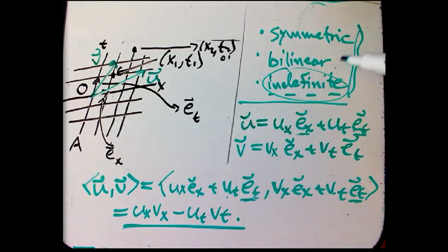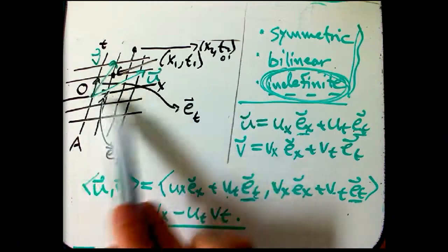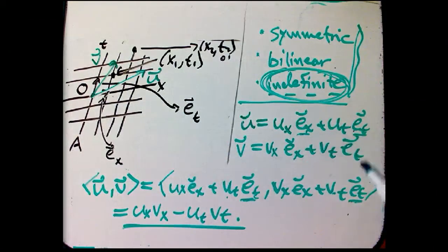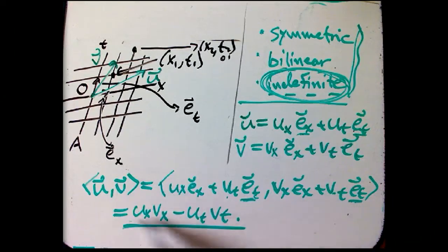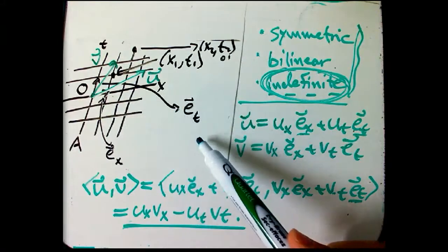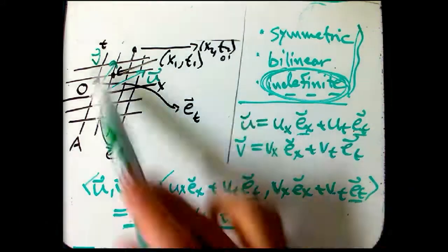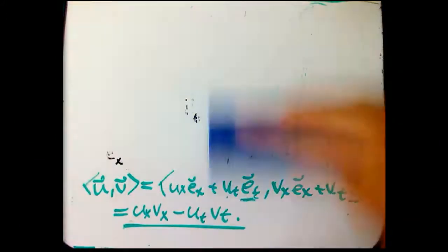I said, change the plus in the usual scalar product formula to a minus, and all this stuff follows. Well, really a better way to say it is change the word, the phrase positive definite to indefinite in the more abstract version. And everything follows, and then if you use an orthogonal unit vector coordinate system, these two orthogonal unit vectors, then you will be forced to use this very simple formula for the Minkowski scalar product. This formula is not true if you use sort of a perverse coordinate system where the T and the X axis are not orthogonal to each other.